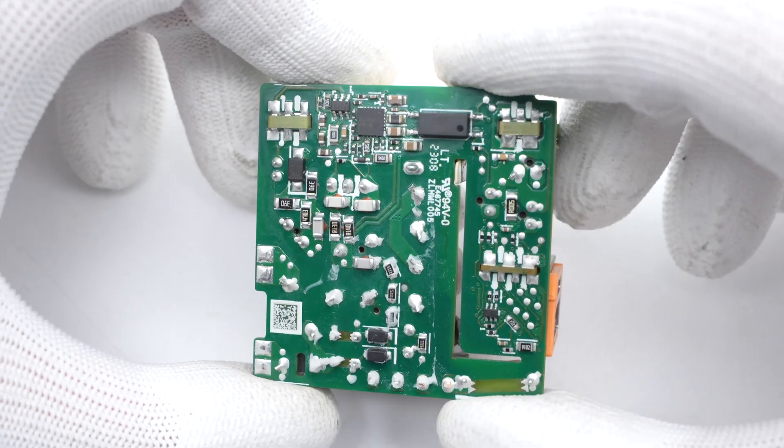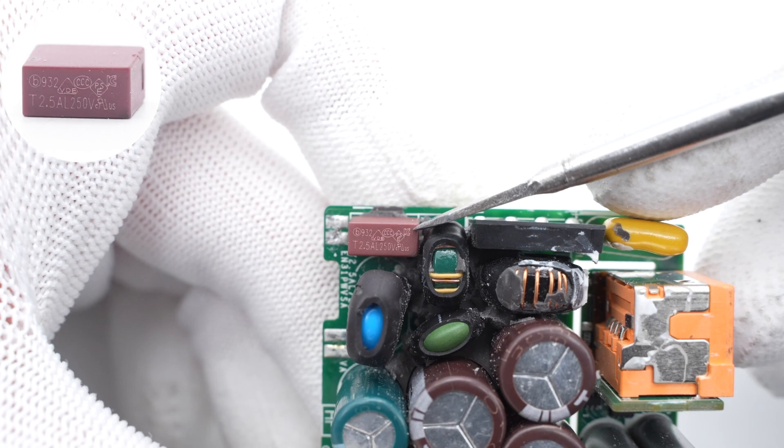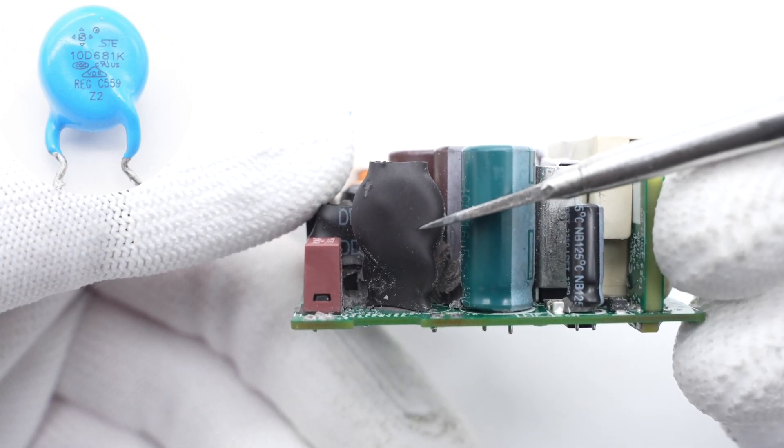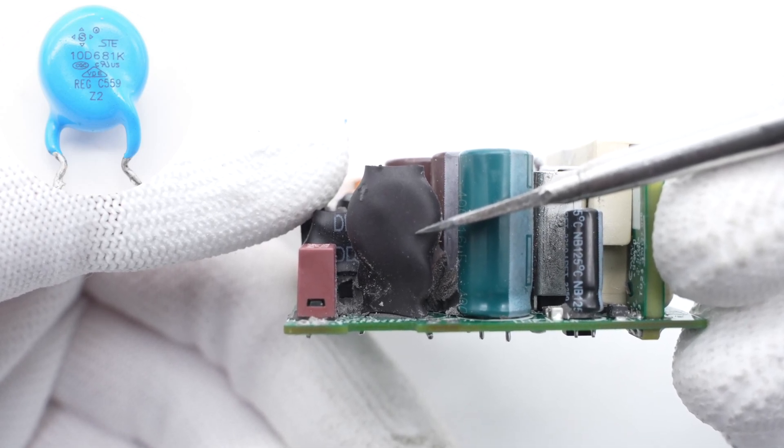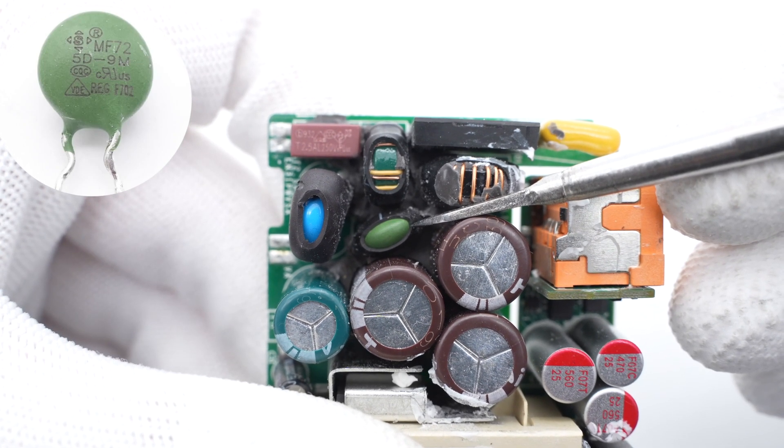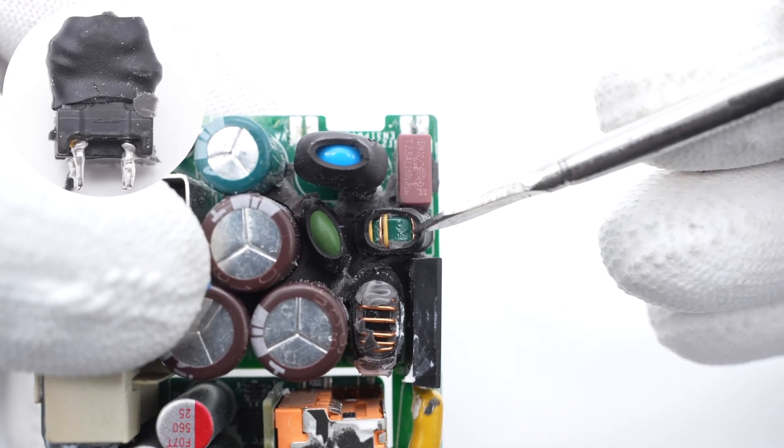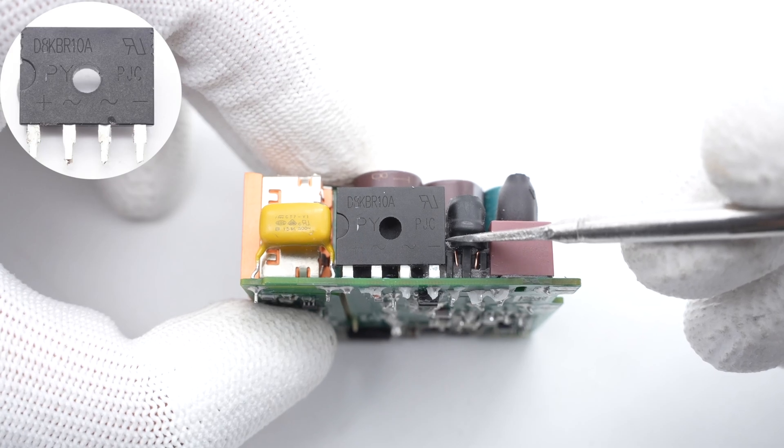Let's introduce all components one by one. The input time delay fuse is from Better Electronics, 2.5A 250V. The blue varistor is from STE for input surge protection, wrapped with heat shrinkable tubing. And the green NTC thermistor is also from STE, used to suppress the surge current. The common-mode choke is also insulated by heat shrinkable tubing. The bridge rectifier is from Pingwei, 8A 1000V.